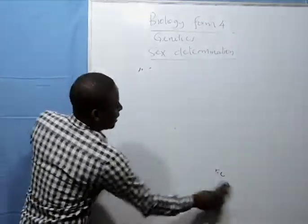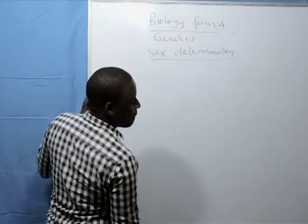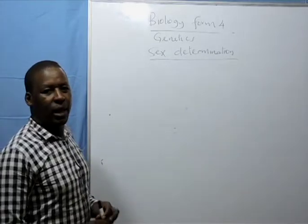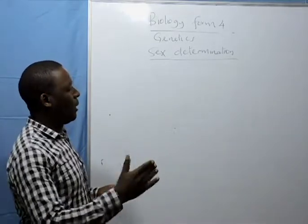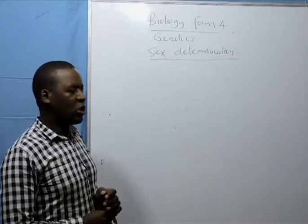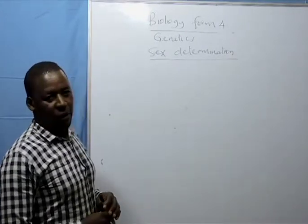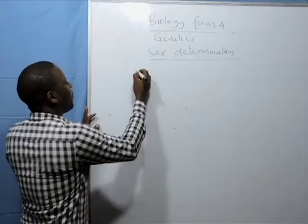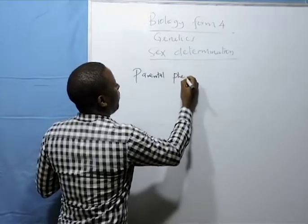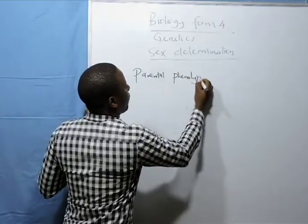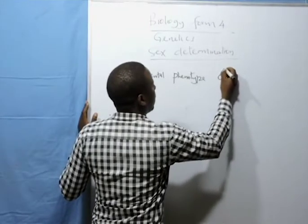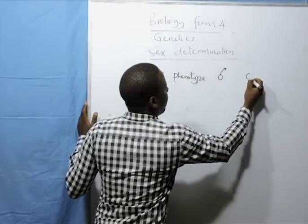In a family of one male and one female, what is the probability of a male child or a female child? We start with parental phenotype. We have the male and we have the female.